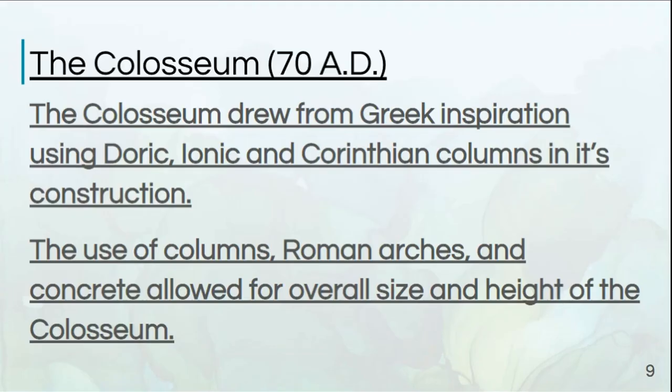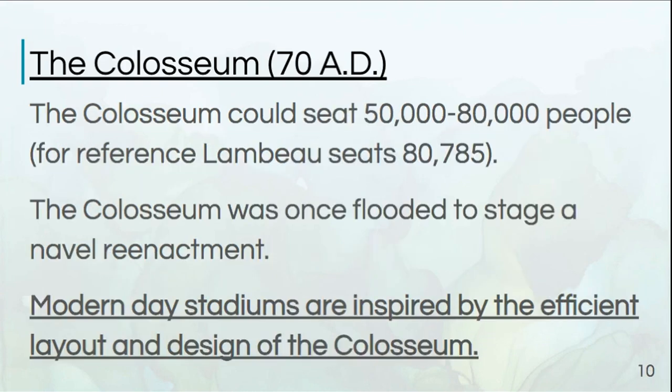Now let's talk about one of my favorite buildings — the Colosseum. The Colosseum drew inspiration from Greece, so they had Doric, Ionic, and Corinthian columns. Not only do we steal from previous cultures, but so did the Romans. The Romans really liked the idea of these columns. They also had Roman arches and concrete.